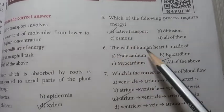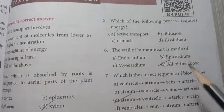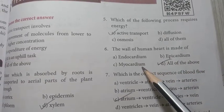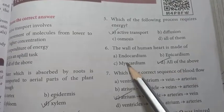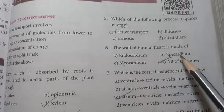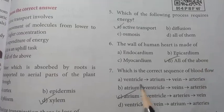Number six: the wall of human heart is made of endocardium, epicardium, myocardium. So D option, all of the above: endocardium, epicardium and myocardium. D option is the right answer.